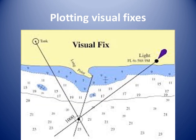Bearings of two charted objects are taken as simultaneously as possible and the time noted. The bearings are corrected for errors as appropriate. The true bearings are plotted from the objects on the chart. The point where the two bearing position lines intersect is the ship's probable position.